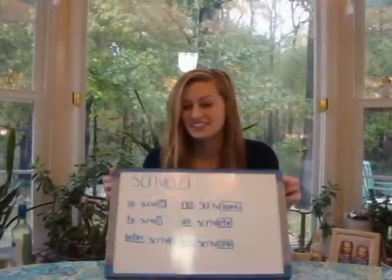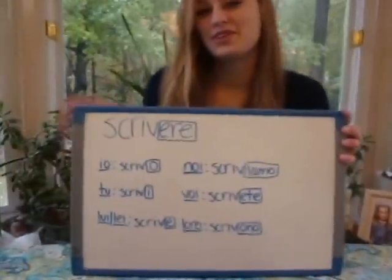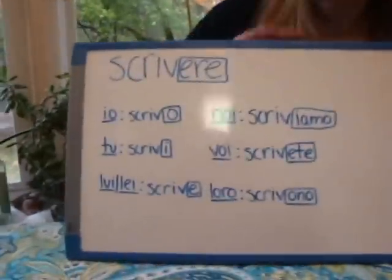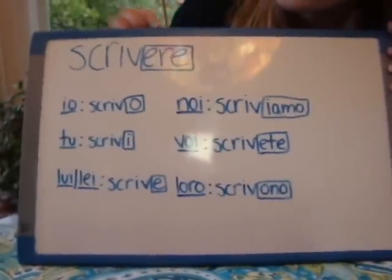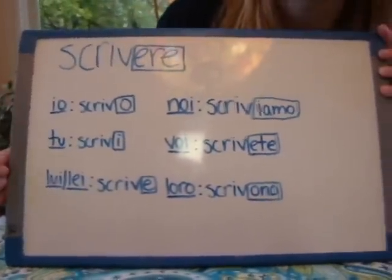Hello. Today we're going to learn how to conjugate ERE verbs. To conjugate ERE verbs, you take away the ERE ending and replace it with one of these endings.